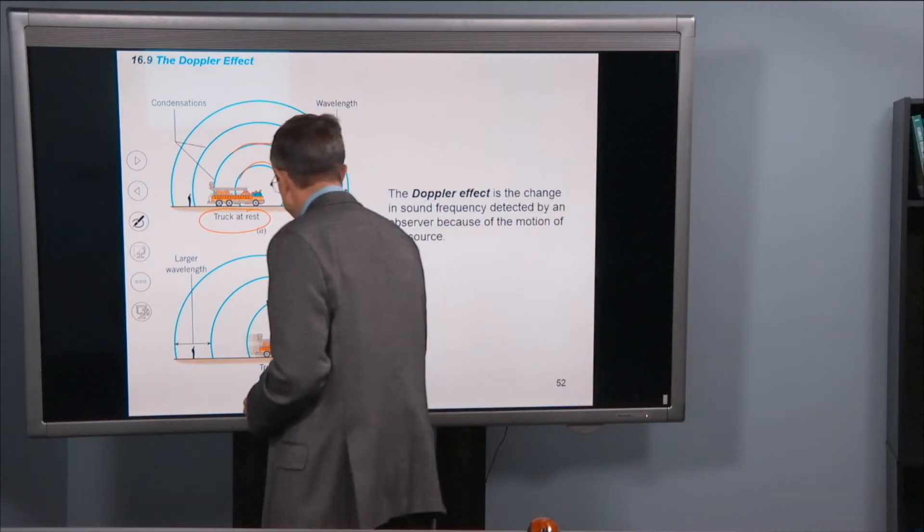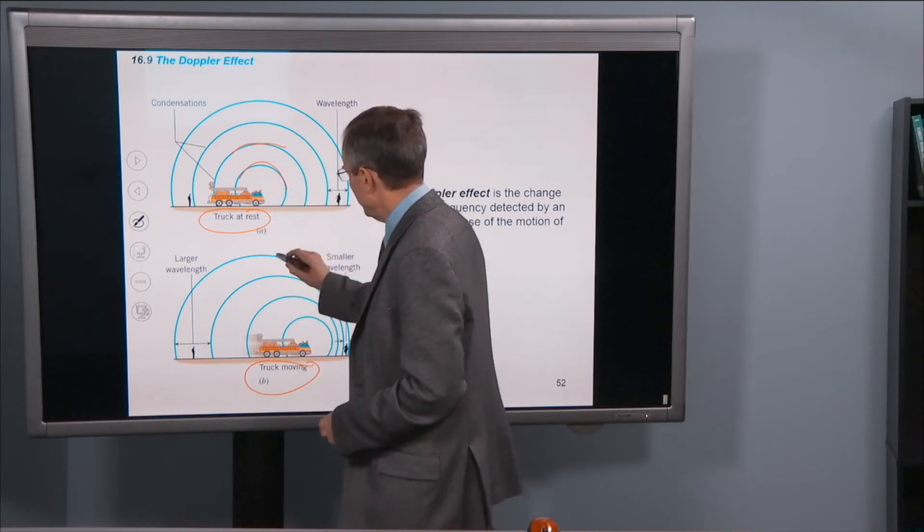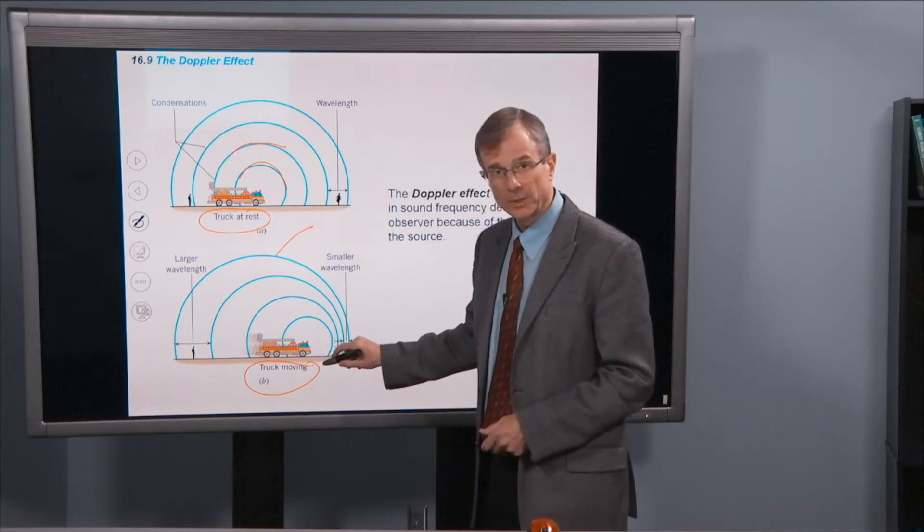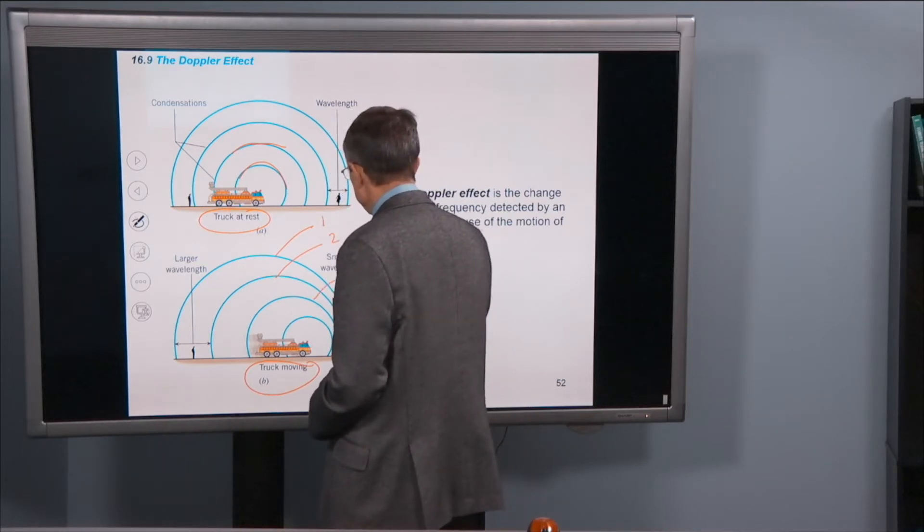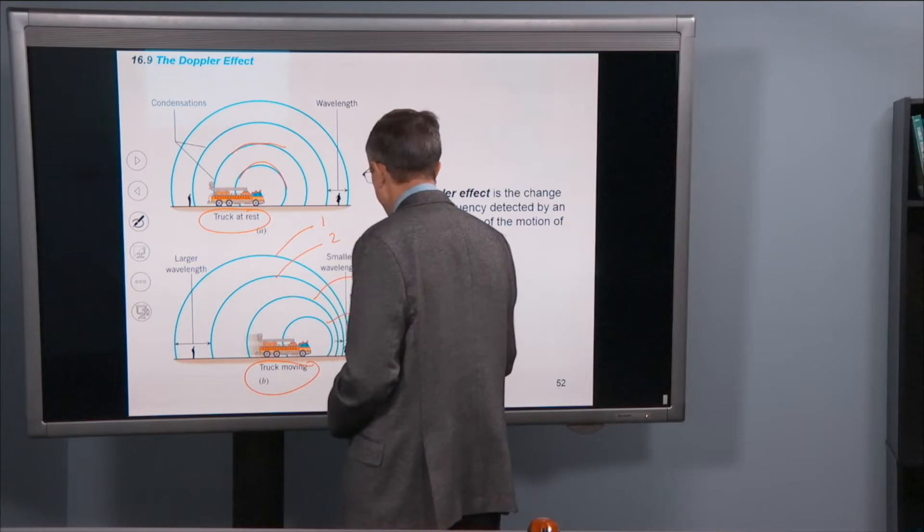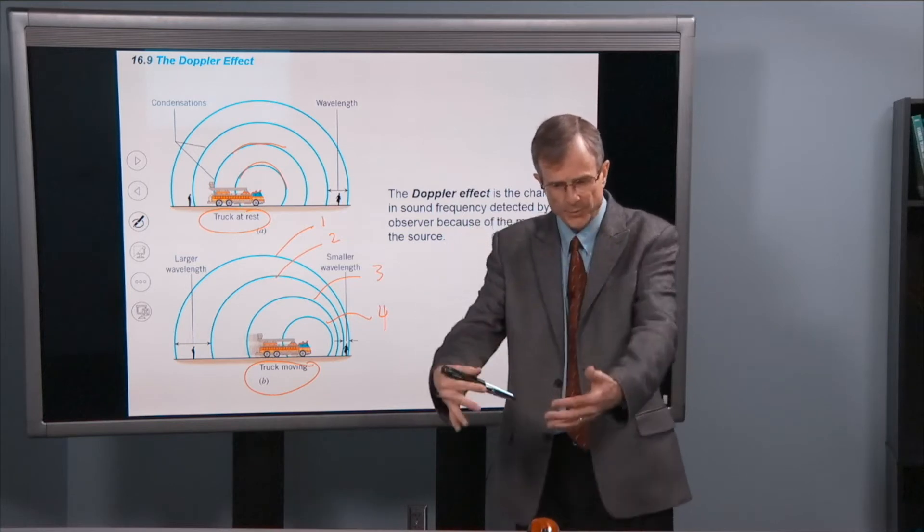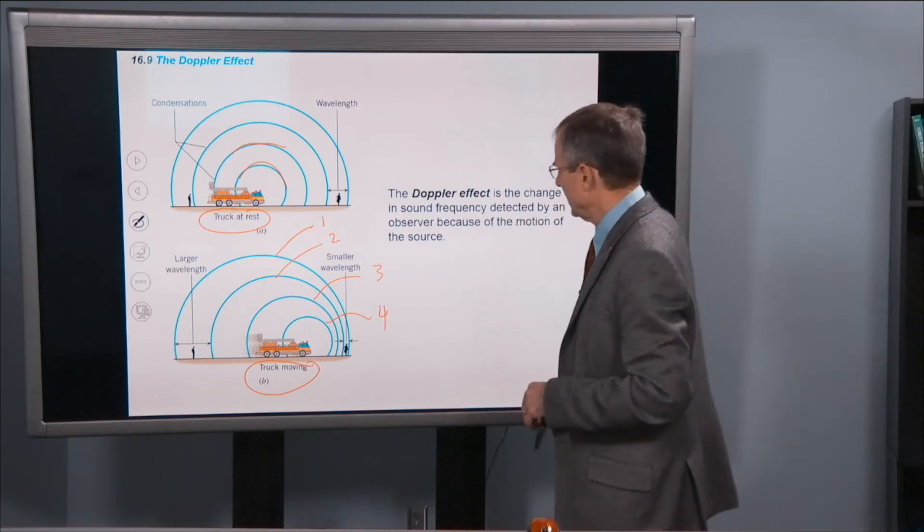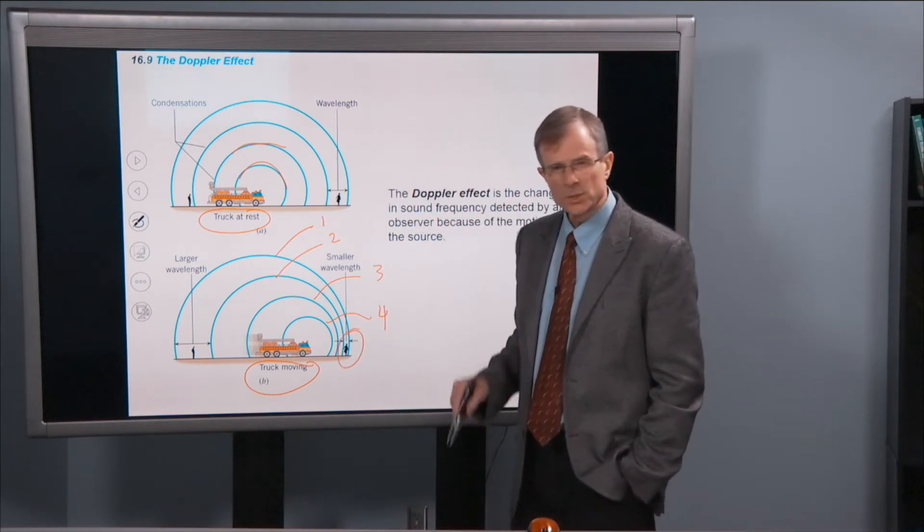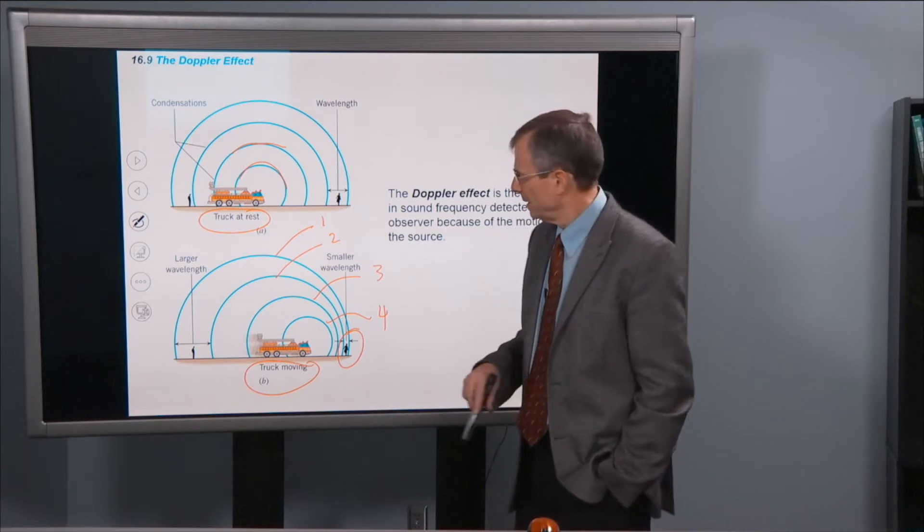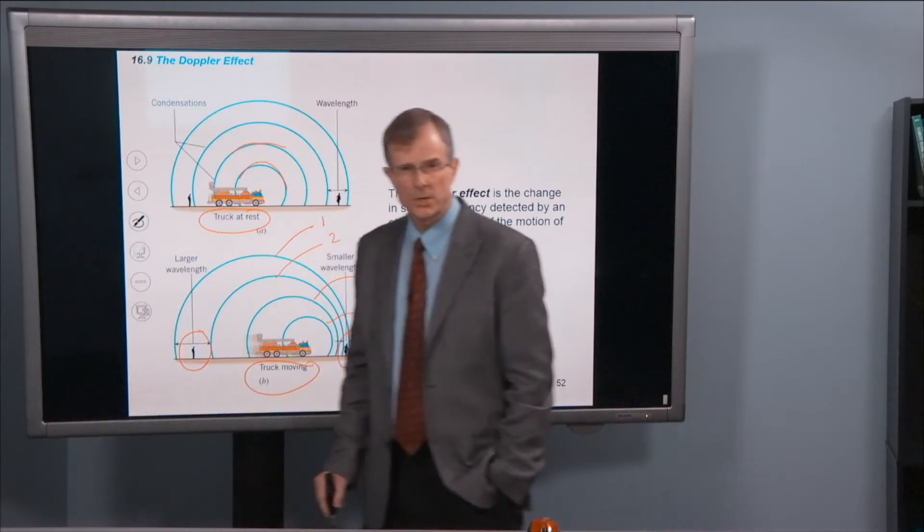But what if the truck is moving? Well, when it was here, it sent out a wave and that wave is now here after it's moved. This is the first wave that it sent out, this is the second, this is the third, and then this is the fourth wave. So these waves, these condensation rings, actually these are spheres, are no longer concentric. They get bunched up here and the observer here sees a smaller wavelength than an observer that's behind the truck who sees a larger wavelength.